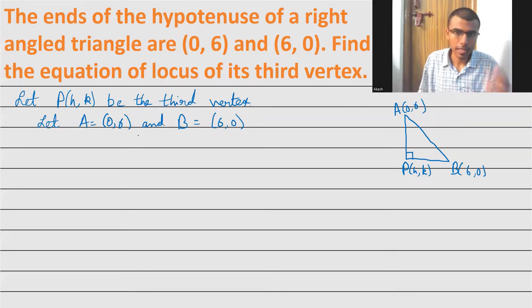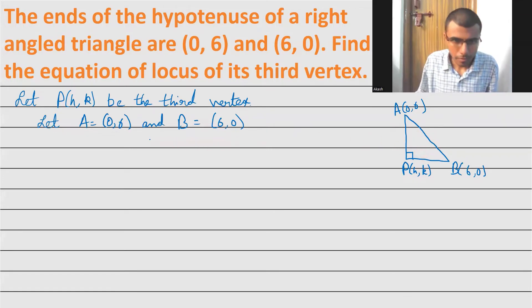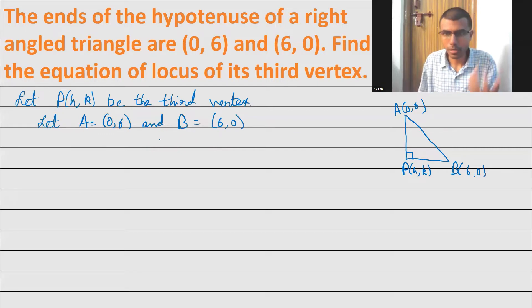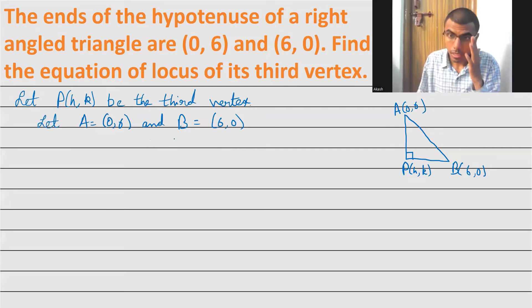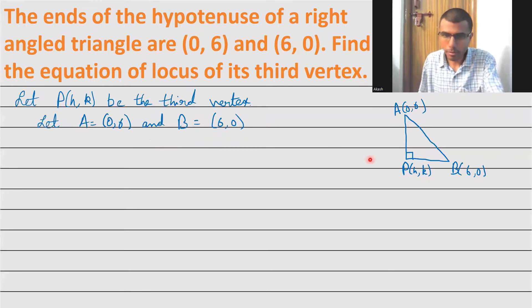We know that in a right-angle triangle, the hypotenuse squared equals the sum of squares of the two sides. So basically PA² + PB² = AB².